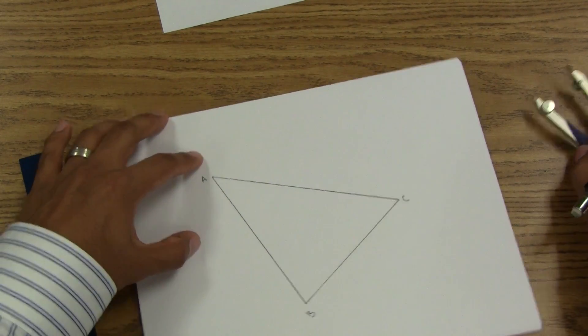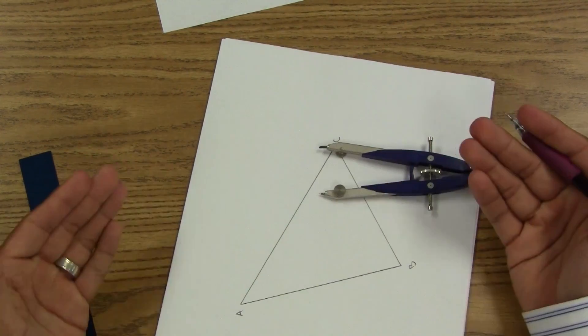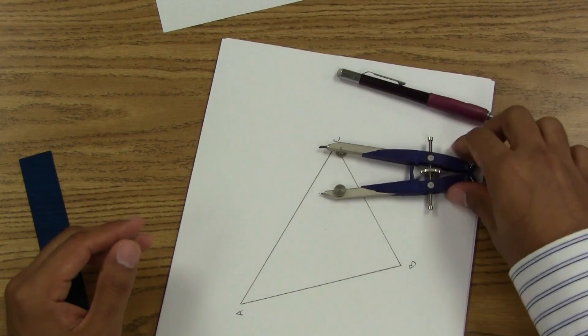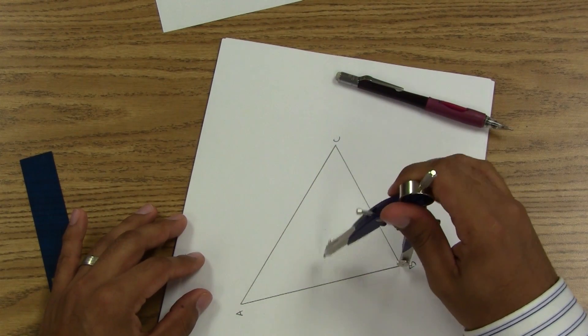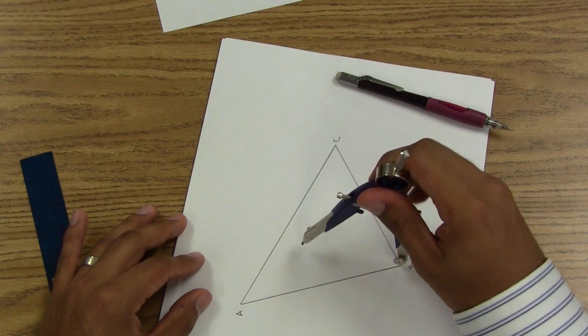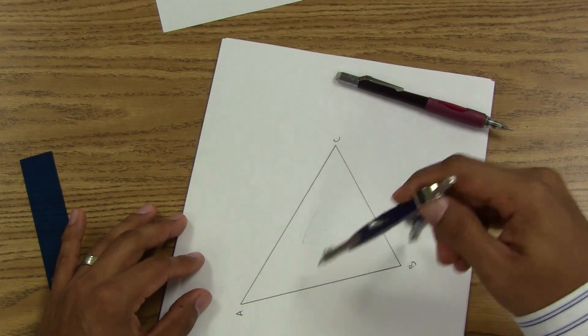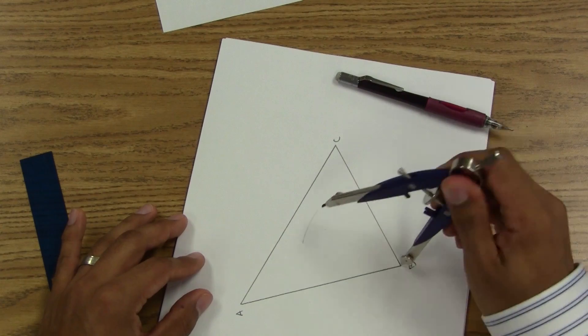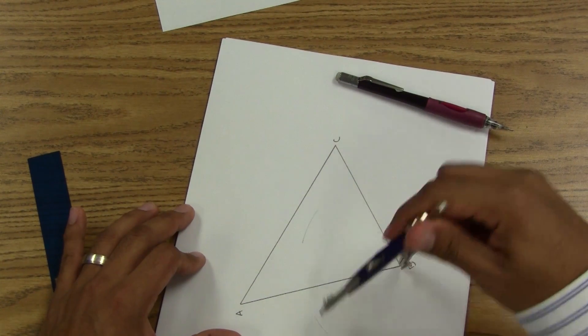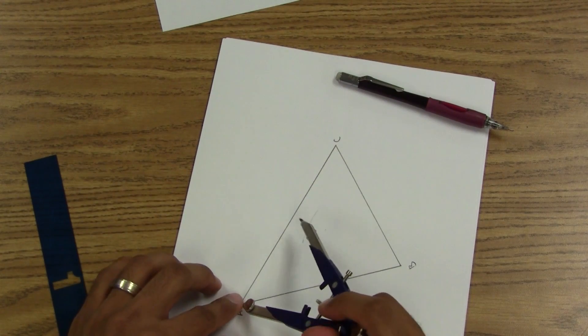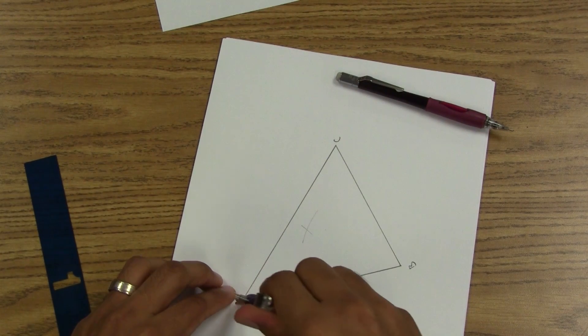So for a perpendicular bisector, remember it's like finding the midpoint, except I'll get to connect the whole line. So opening up your compass past halfway, I'll make a tally up here, tally down here. Switch over, here and here.